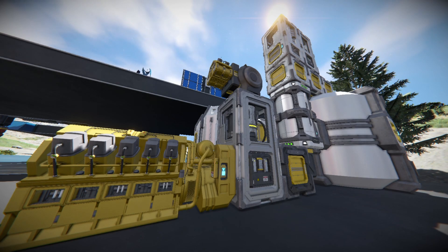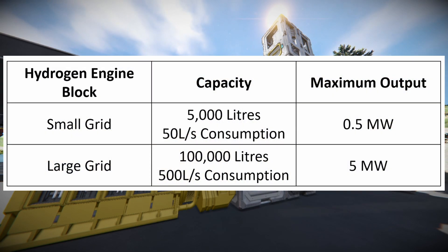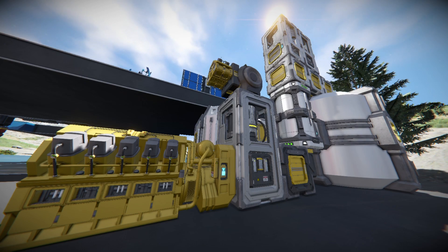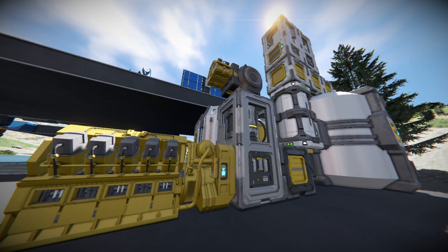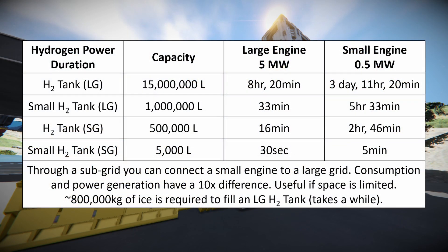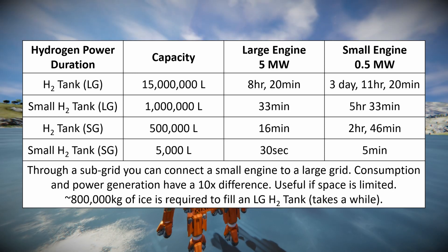Next up we have hydrogen power, generated by burning hydrogen gas in an engine. Hydrogen gas comes from running ice through an O2H2 generator, so you'll need a decent amount of ice, some automated drilling, and a conveyor network. Hydrogen engines are pretty powerful — on a large grid, a hydrogen engine fueled by a large hydrogen tank will run for over 8 hours at maximum output of 5 MW. Here is a table showing the duration and power output of hydrogen engines for large and small grids.